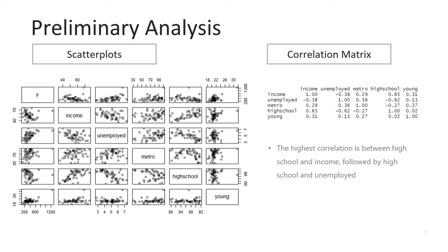From the scatter plots of our variables, we can see that there exists some correlation between income and high school and then maybe some between income and metropolitan areas. On the right we have the correlation matrix, which shows the correlation between all combinations of two predictors. The diagonal is all ones because the predictor always has 100% correlation with itself. The highest correlation appears to be between high school and income at 0.65, followed closely by high school and unemployed at 0.62. These combinations of predictors make logical sense to be related. The correlation values aren't too concerning, but this is definitely something to keep in mind as we move forward in choosing a model.